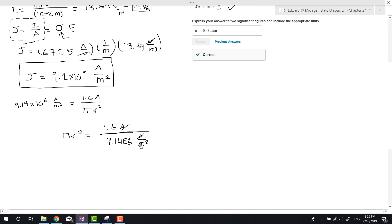Dividing by π and taking the square root gives us r = 2.36×10^-4 meters. Multiplying by 2 for diameter: d = 4.72×10^-4 meters, or 0.472 millimeters, which matches the answer. And that's it.